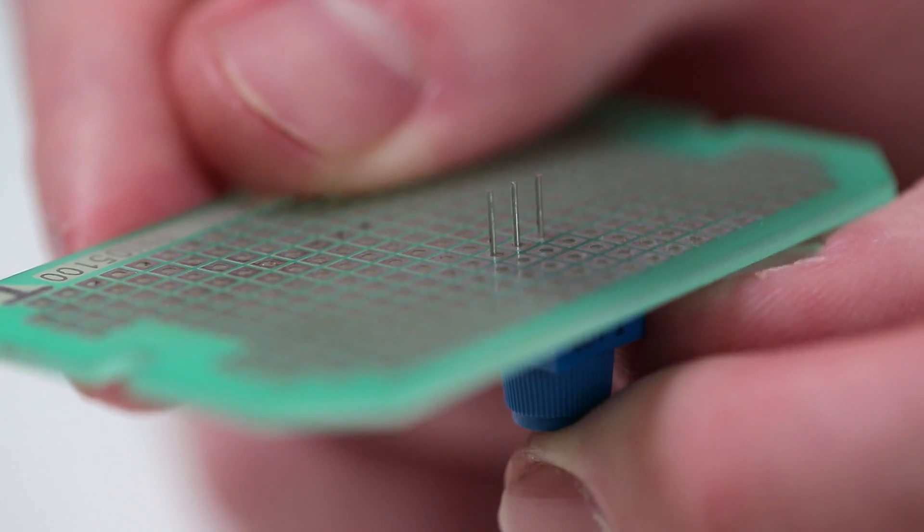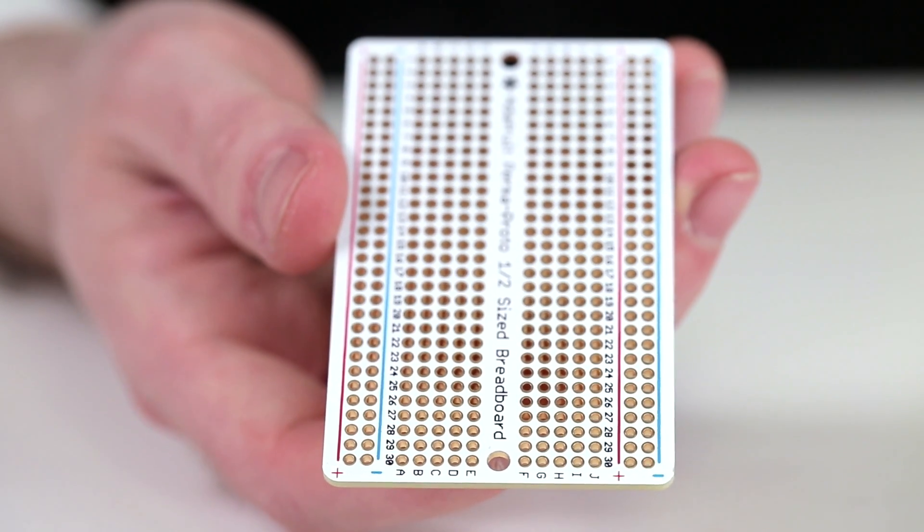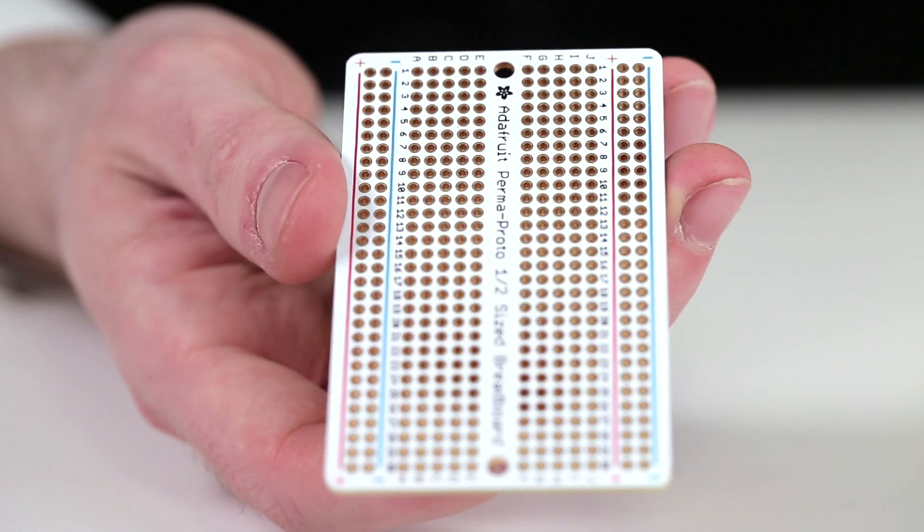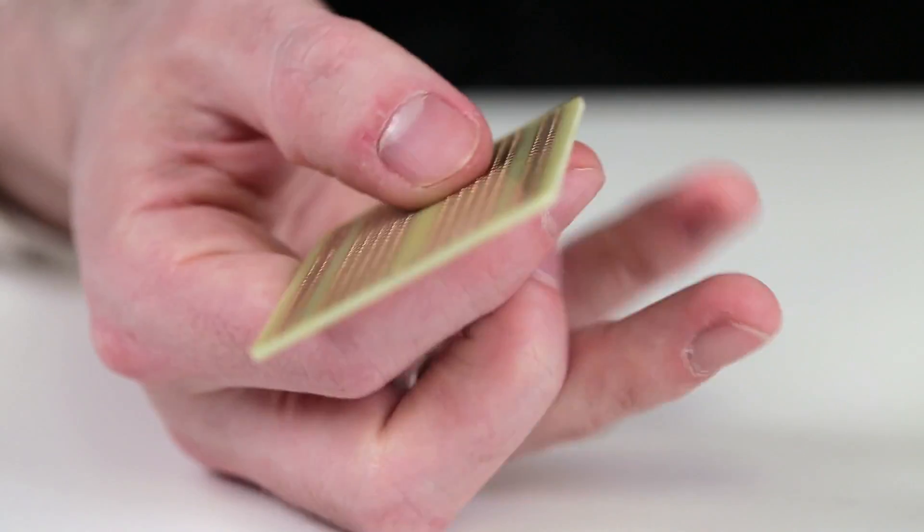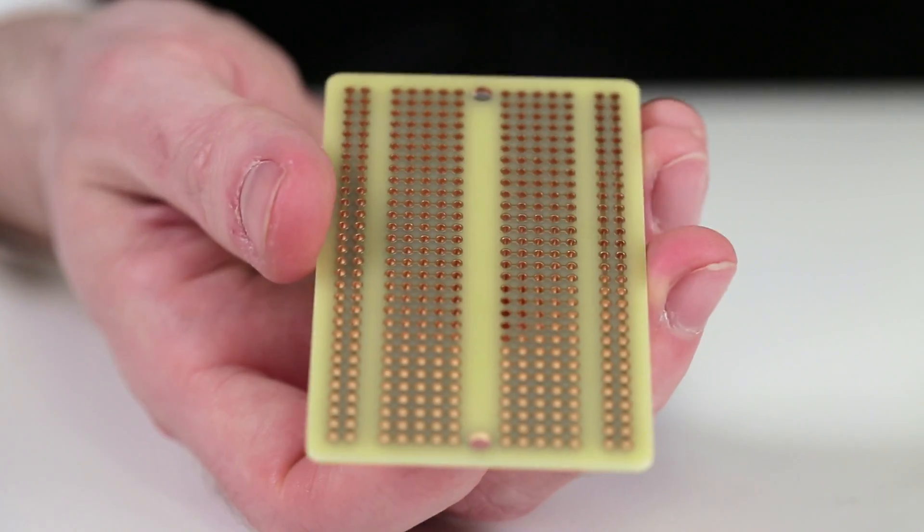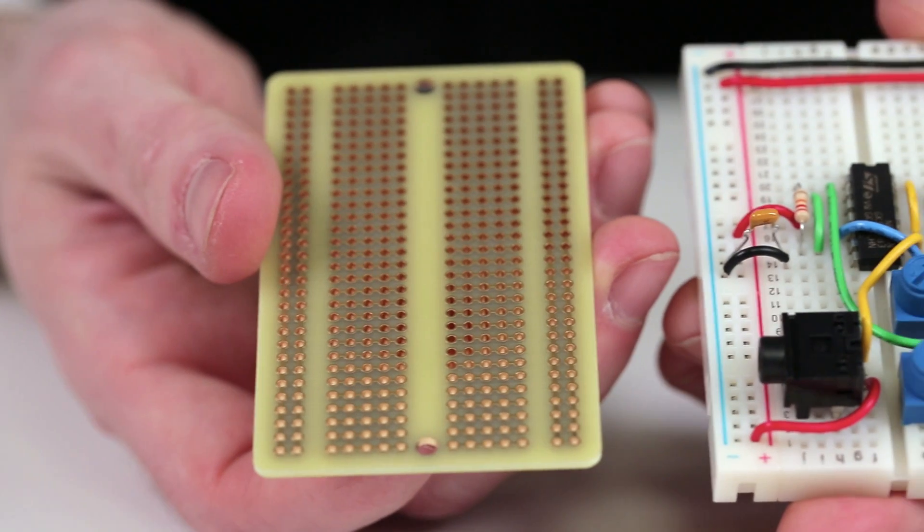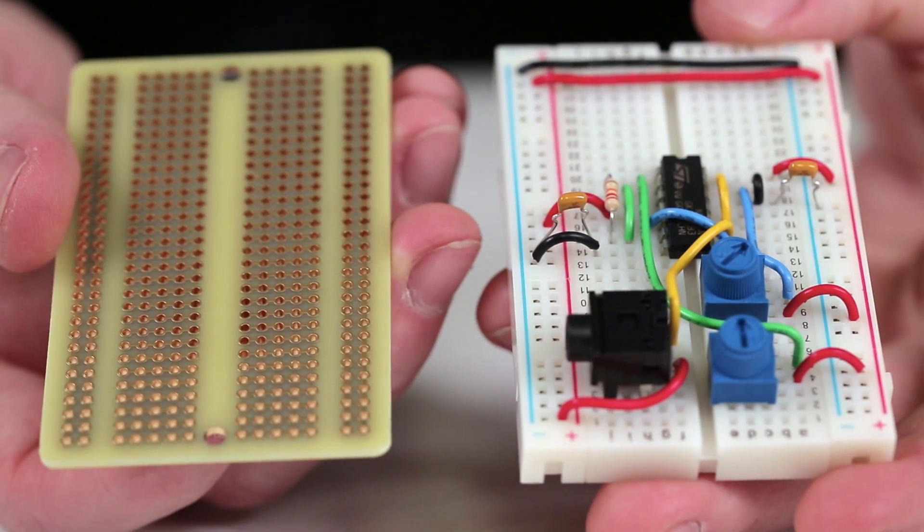And to make transferring our circuit even easier, we can use a perma-proto board, which has its pads pre-connected in the same configuration as our breadboard. So we can place all our components in the same spots they were before.